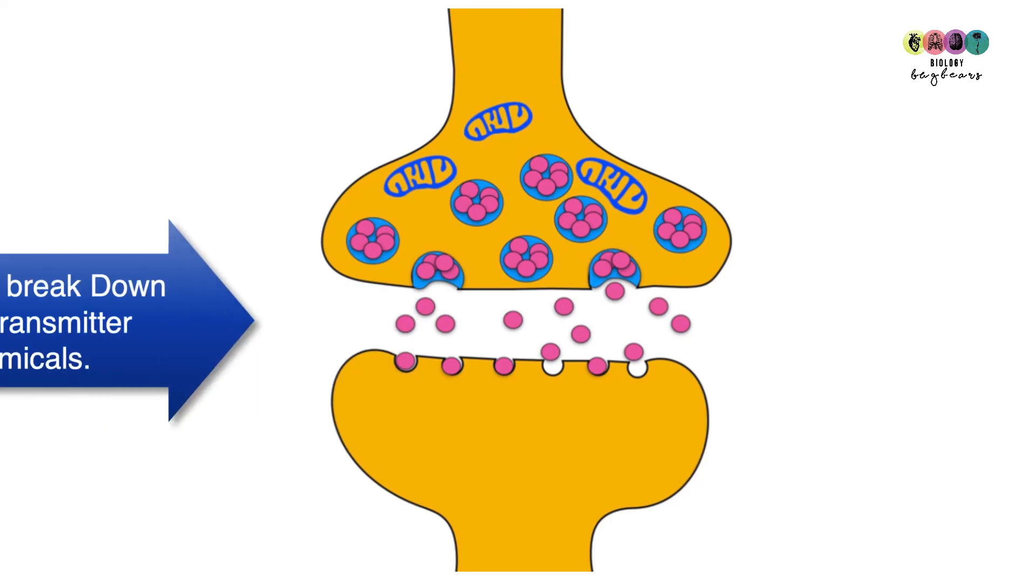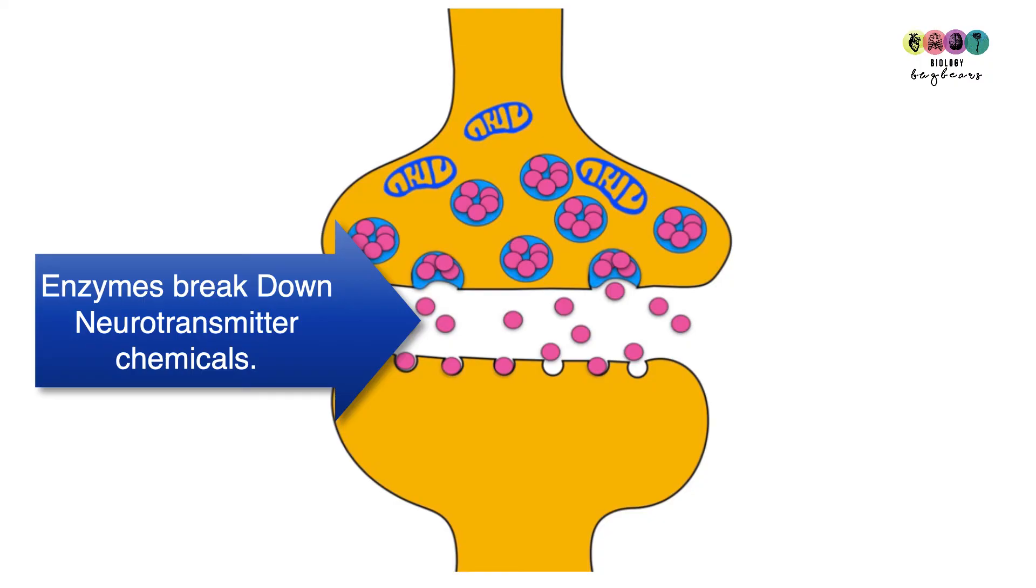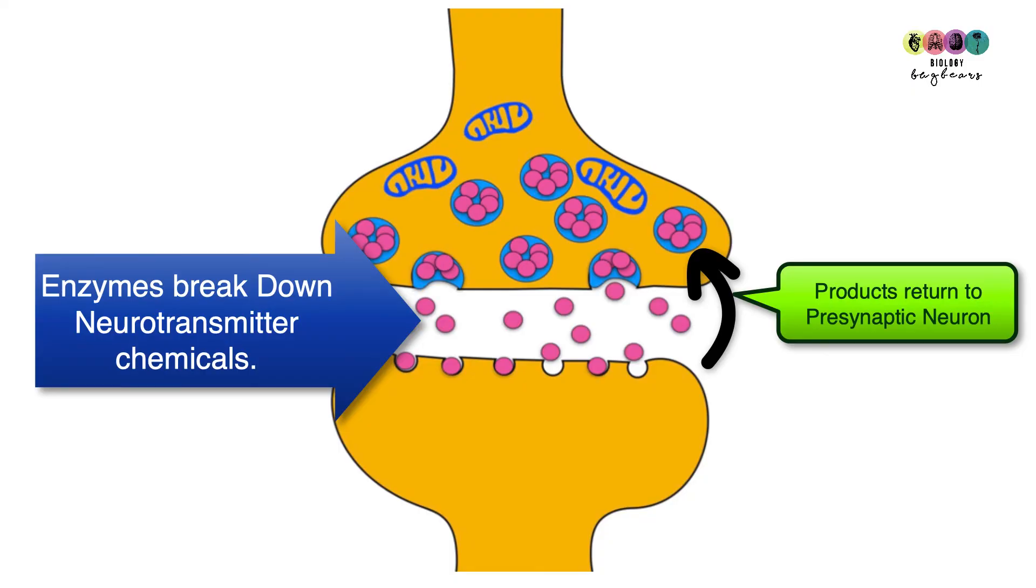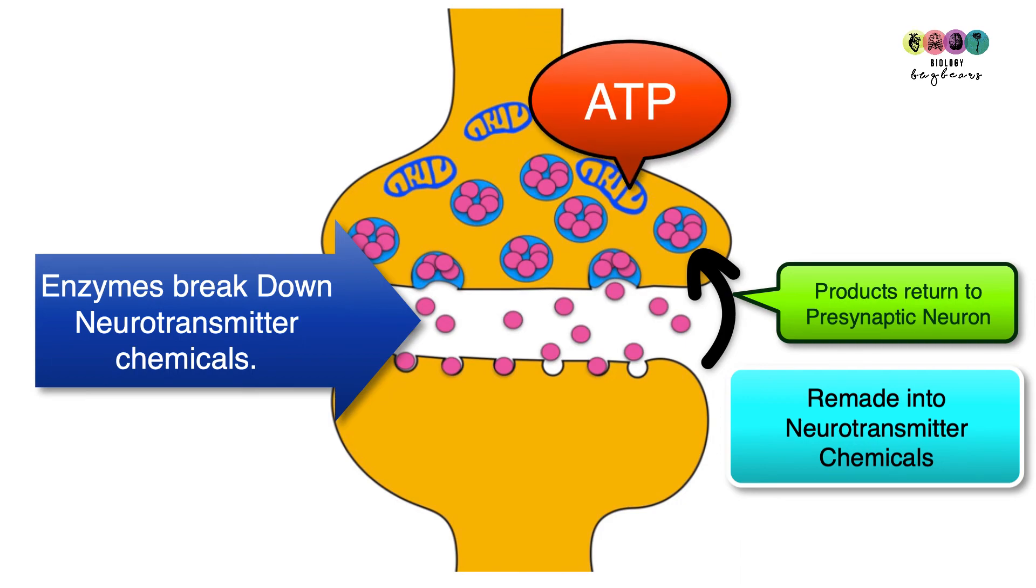What happens to the neurotransmitter chemicals after this? They get broken down by enzymes and the products go back to the pre-synaptic neuron where they are remade into neurotransmitter chemicals. The reason why we have all these mitochondria in the pre-synaptic neuron in the neurotransmitter swelling is because this rebuilding requires lots of ATP.